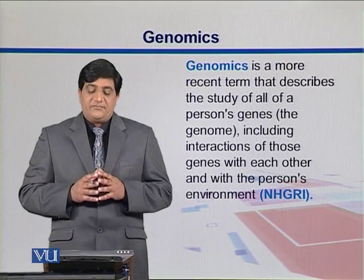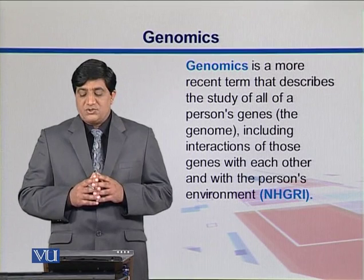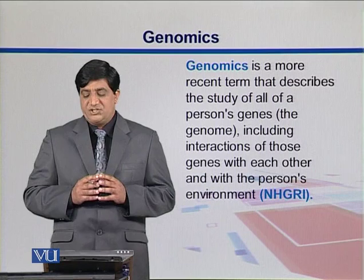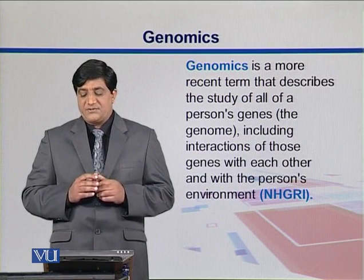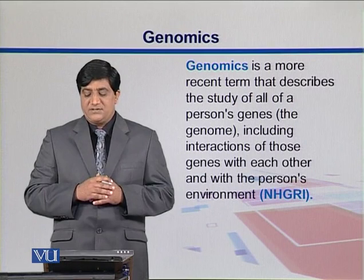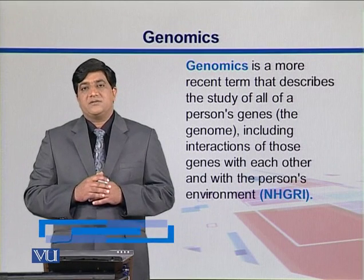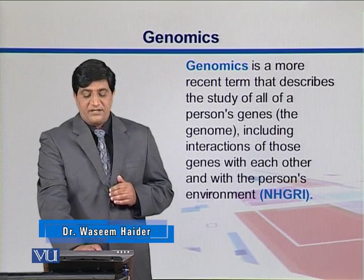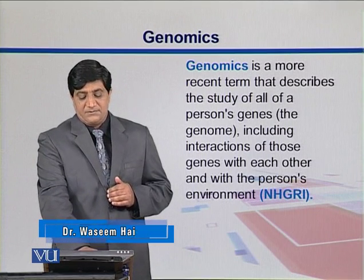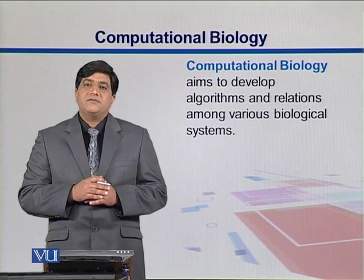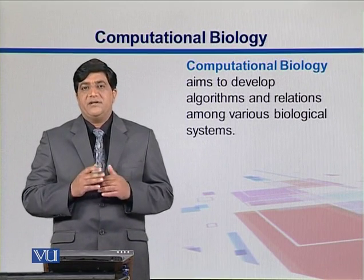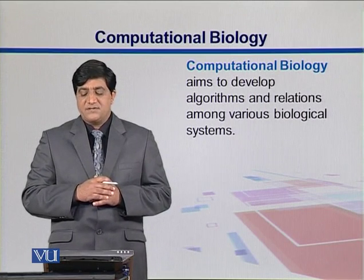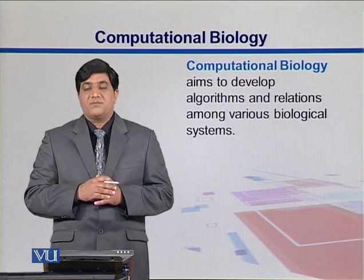There is another correlated field: genomics. Genomics is a more recent term that describes the study of all of a person's genes — the genome — including interaction of these genes with others and with a person's environment, as defined by the NHGRI, the National Human Genome Research Institute. Computational biology is also a correlated field; it aims to develop algorithms and relations among various biological systems.